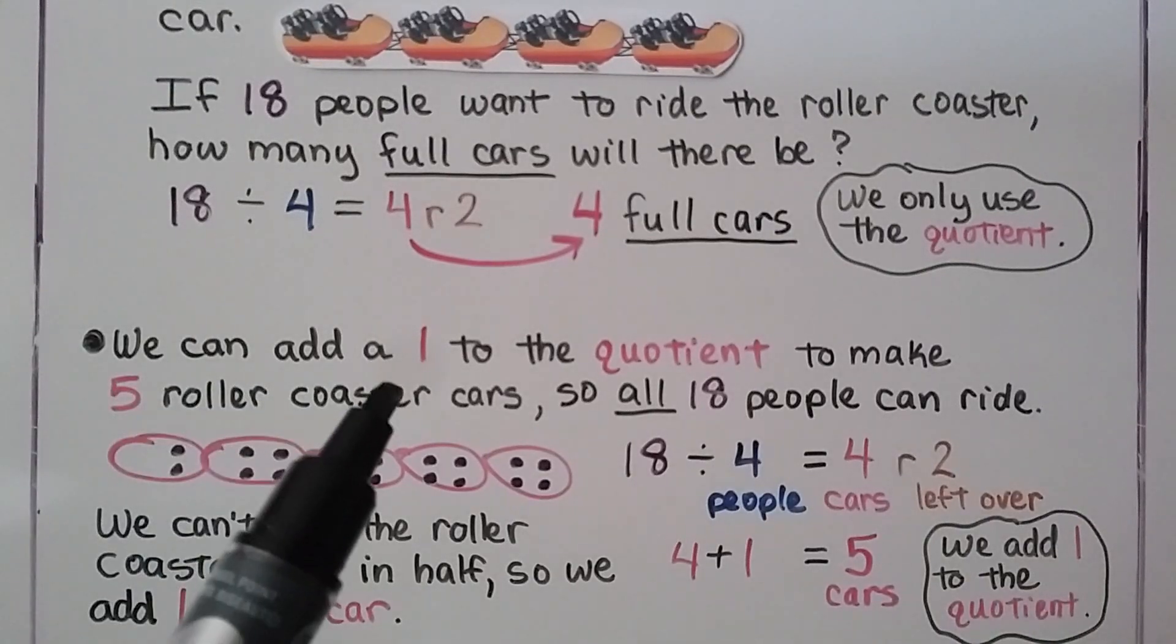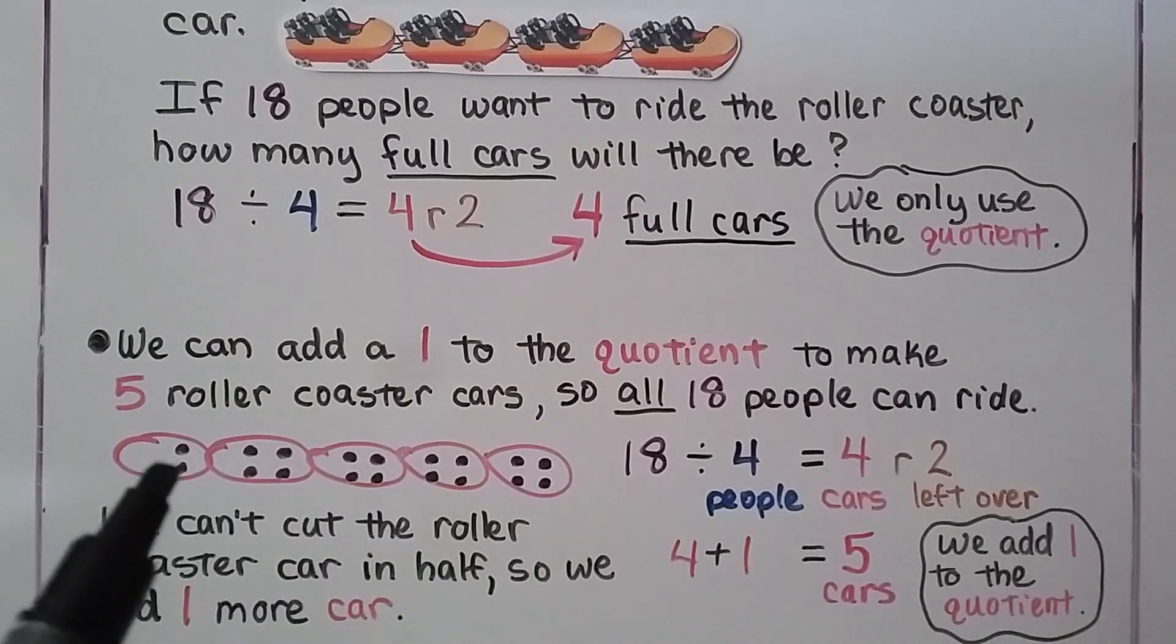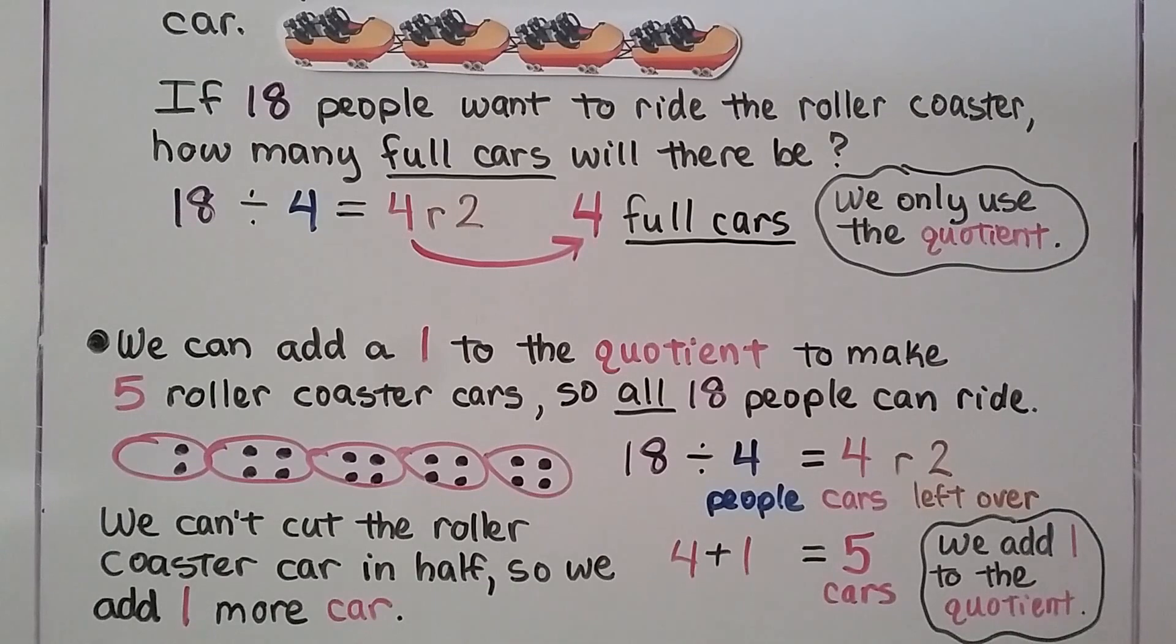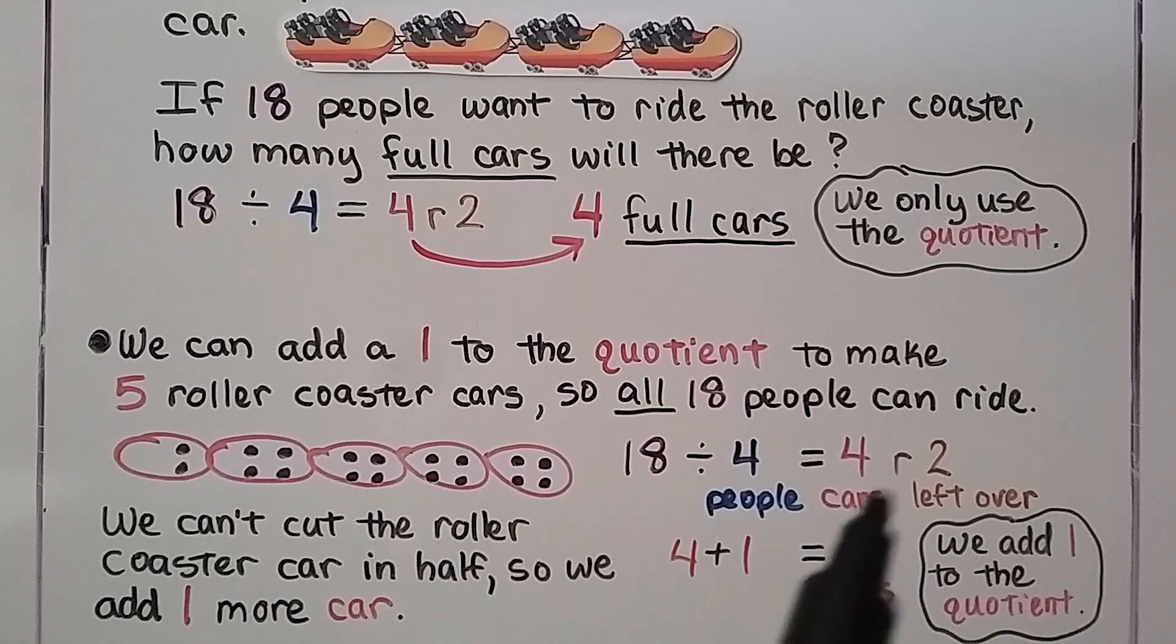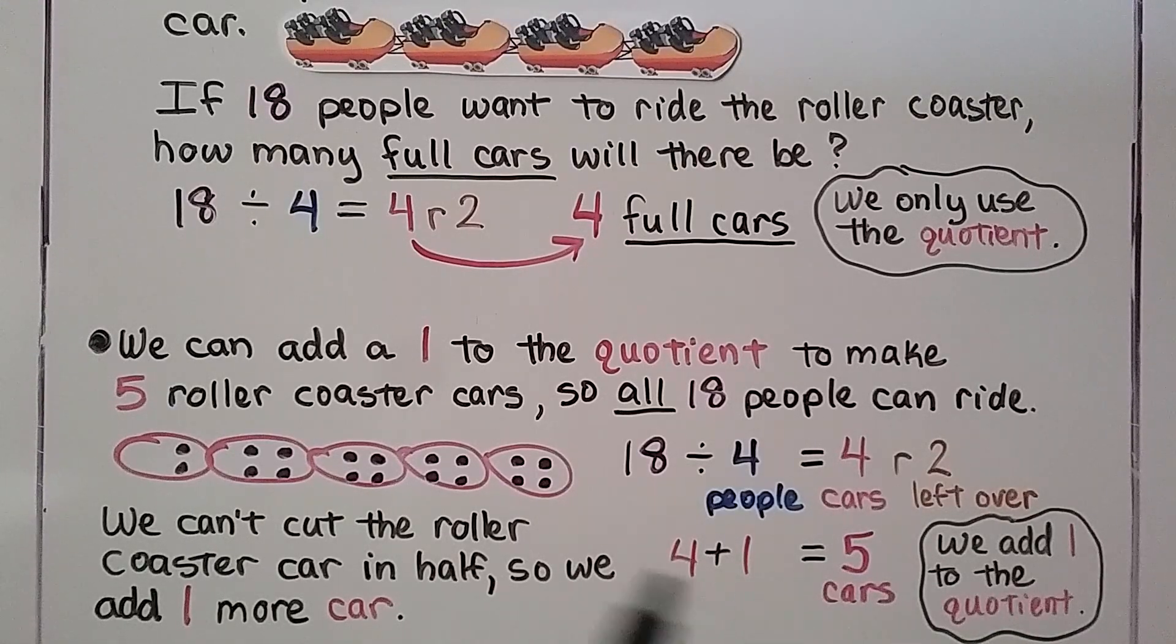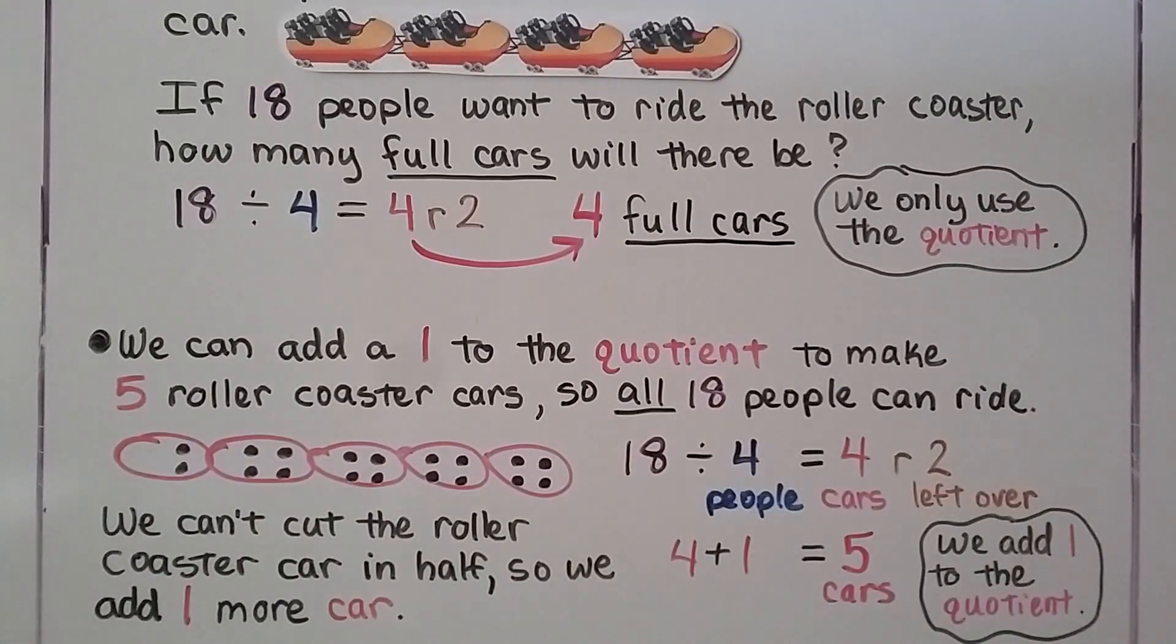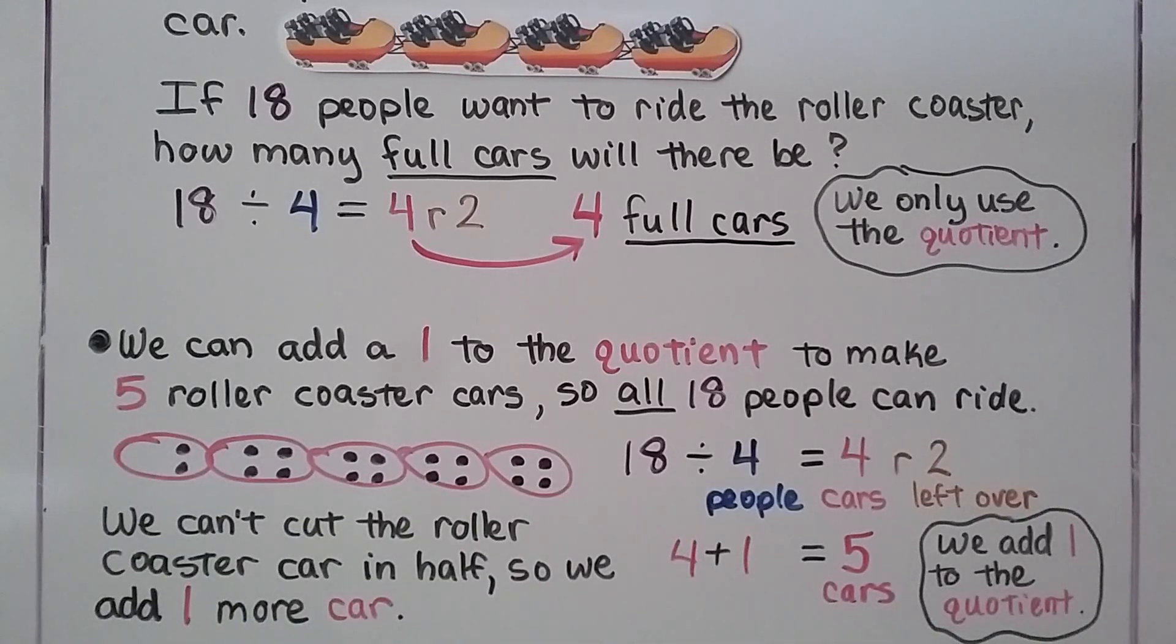We could also add 1 to the quotient. We had 4, we'll add 1 to it, to make 5 roller coaster cars. So all 18 people can ride, but now we've got 4 full ones and one only half full, don't we? We have 18 divided by 4, that's the 4 people in each car. There's 4 cars, we have 2 left over. So we add 1 more car for those 2 left over people. See? We can't cut the roller coaster car in half, so we just add 1 more car. That is just not a full car. But then all 18 people could go, couldn't they? Okay. So that's when we add 1 to the quotient.